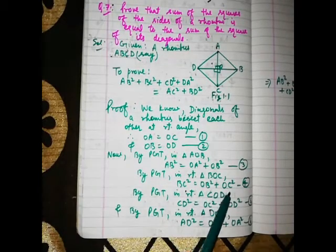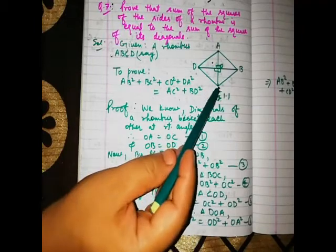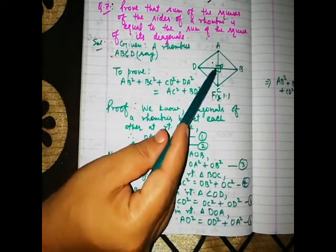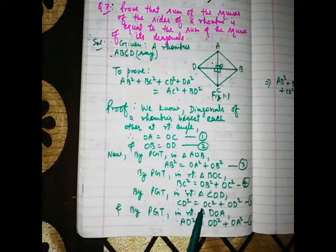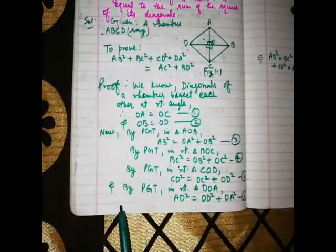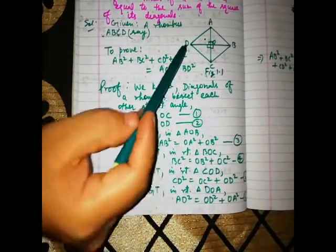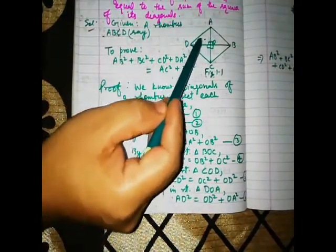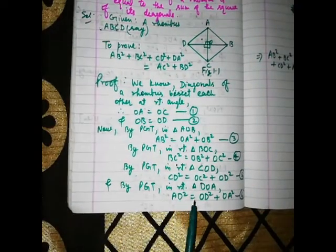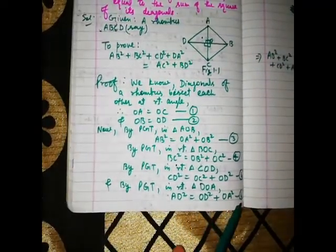In right triangle COD: CD² equals OC² plus OD². In right triangle DOA: AD² equals OD² plus OA².